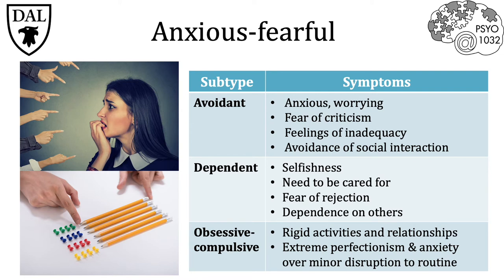The second subtype is dependent personality disorder — someone who has a great fear of being rejected, resulting in the development of extremely clingy and dependent relationships with others, such that they only feel safe when in these relationships.